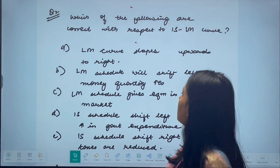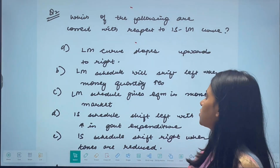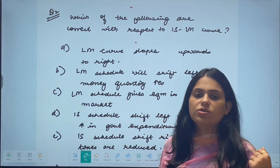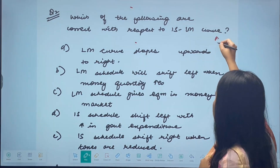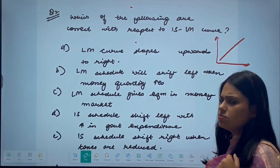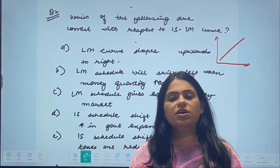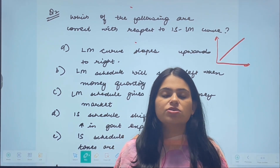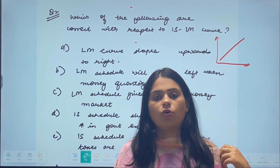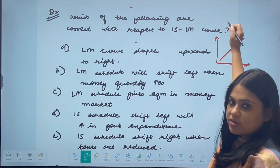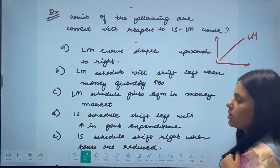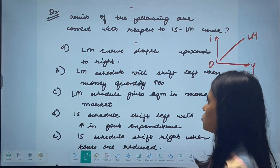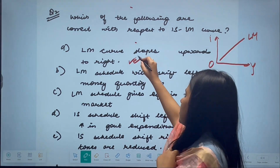The next question asks which statements are correct with respect to the IS and LM curves. The first option says the LM curve slopes upwards to the right. The LM curve shows equilibrium in the money market — when we equate demand of money to supply of money. The LM curve is drawn as an upward sloping curve, with income on the x-axis and interest rate on the y-axis. So this statement is correct.